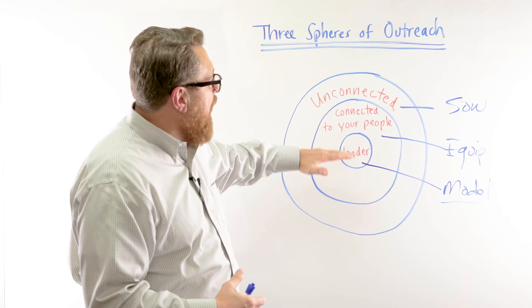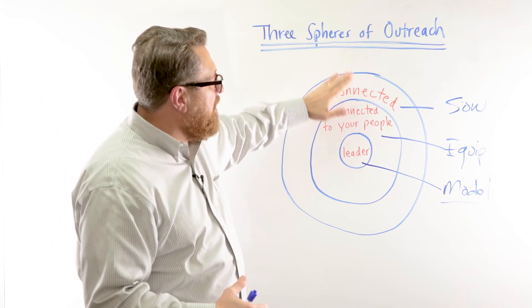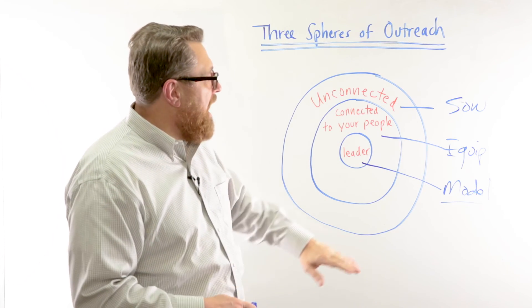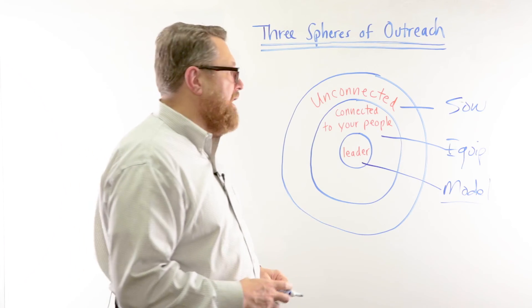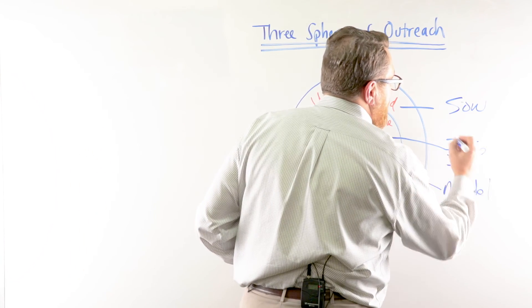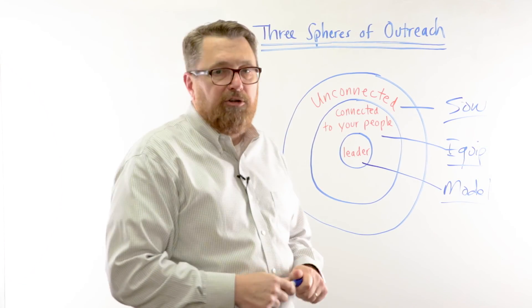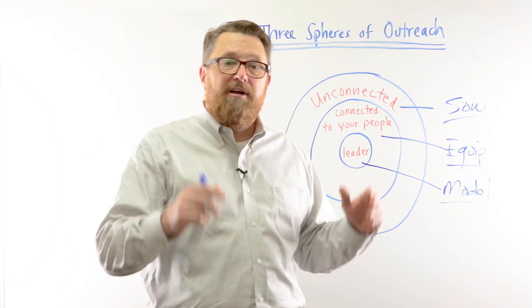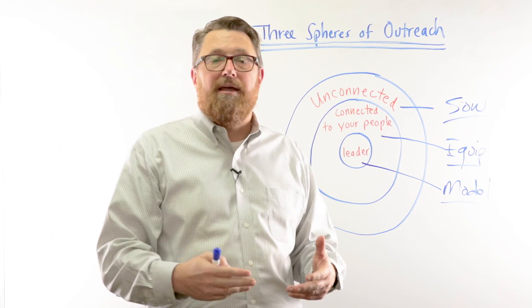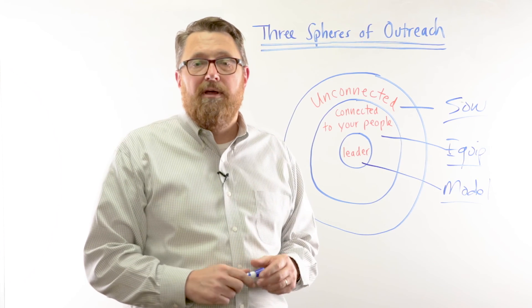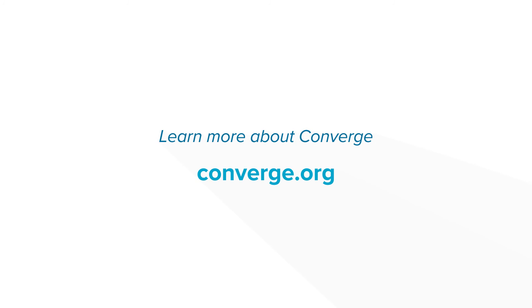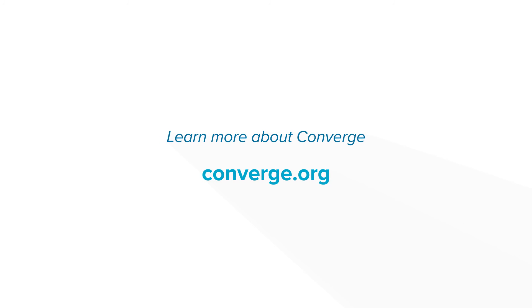This will help you as you look at the three spheres and develop strategies to move forward. Growing churches — churches that are evangelistic in nature — are clicking at every level of this: the leaders are modeling evangelism, they're equipping their people to share their faith, and they're constantly, consistently, and compassionately sowing seeds of awareness into their community. This has been a Converge Whiteboard Leadership Moment. To learn more about Converge or to join us, check out converge.org.